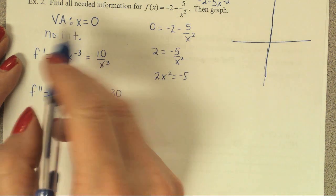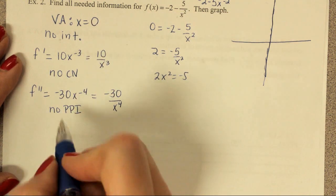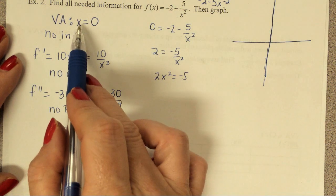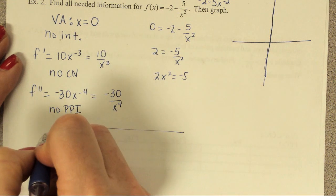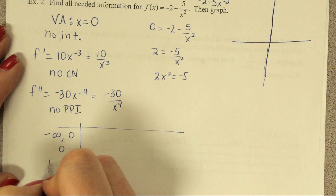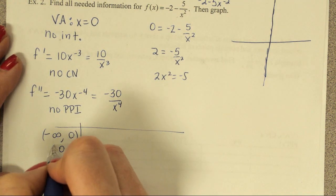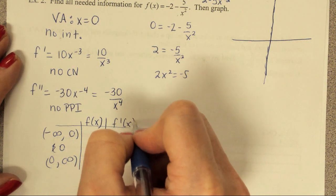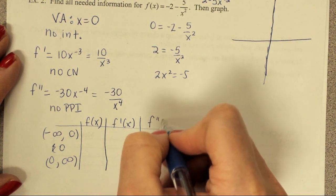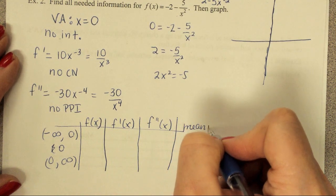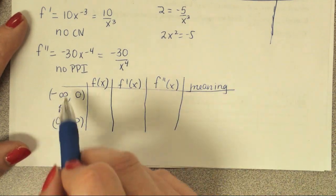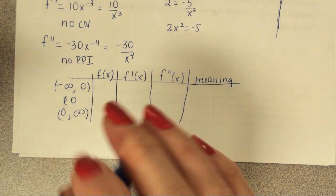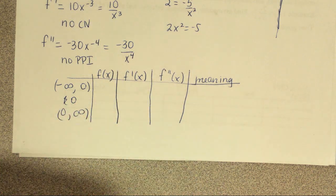So our chart is going to be pretty easy — all we have is a vertical asymptote. Taking one value, doubling and adding one: we need three rows — negative infinity to zero, zero, and zero to infinity. The chart includes f of x, f prime of x, f double prime of x, and the meaning. This lets us do the first and second derivative tests all at the same time in one chart.